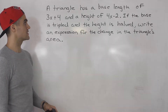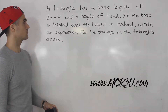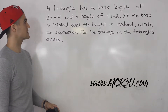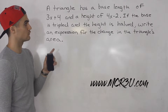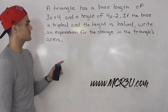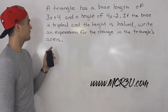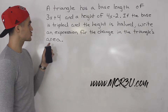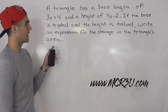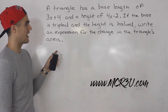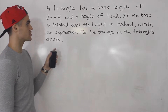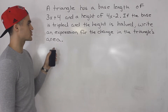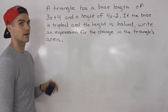Welcome back everybody. In this question we're told that a triangle has a base length of 3x plus 4 and a height of 4x minus 2. If the base is tripled and the height is halved, write an expression for the change in the triangle's area.